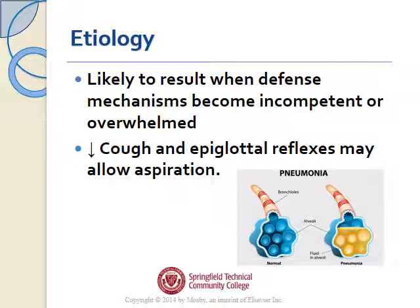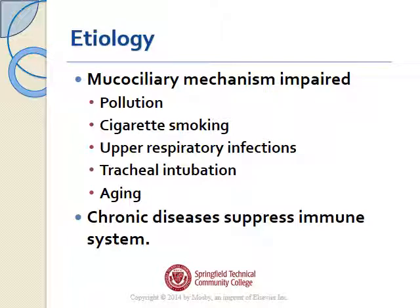What's the cause of it? It's likely to result when defense mechanisms become incompetent or when they become overwhelmed. Decreased cough and epiglottal reflexes may allow for aspiration. This is a normal alveolus — open and fluffy like a sponge with no water in it. When patients get pneumonia, the fluid exudate from those infected particles builds up in the alveoli and there's no room for gas exchange.